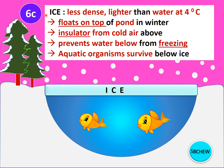Since ice is less dense than water at four degrees Celsius, it is lighter than water, so during winter the ice floats on top of the water in ponds. The floating ice acts as an insulator from the cold air above, preventing the cold from penetrating and freezing the water below. With the ice in place, the water remains in a liquid state and does not freeze.